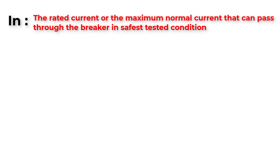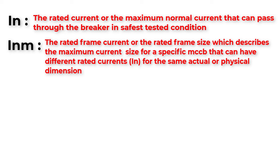Let's now understand some important terminologies on the MCCB nameplate. In is the rated current or the maximum normal current that can pass through the breaker in safest tested conditions. Another important factor here is rated frame size or rated frame current InM, which describes the maximum current size for a specific MCCB that can have different rated currents In for the same actual or physical dimension.